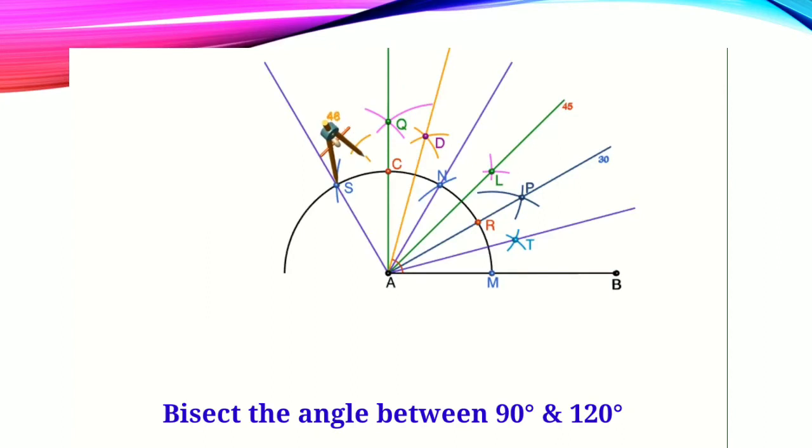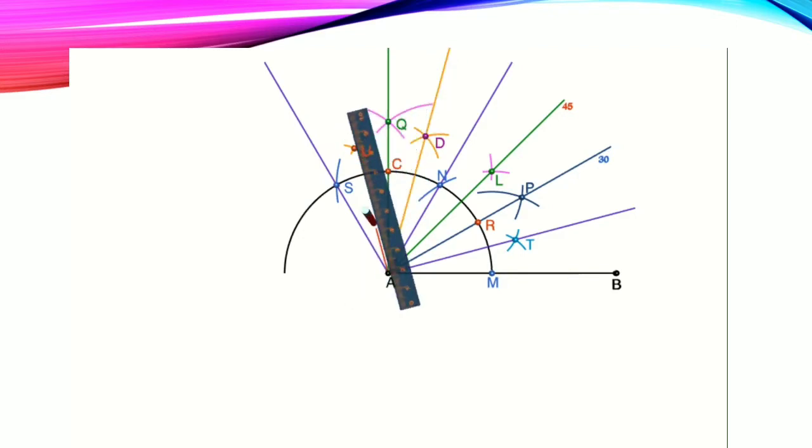We will bisect the angle between 90 degrees and 120 degrees. For this, you know how to bisect, and this is how we get an angle of 105 degrees. For the previous video, please check out the link given in the description.